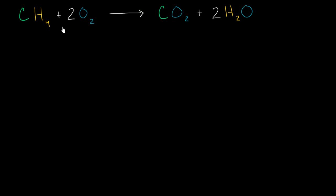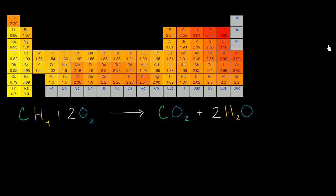Now let's work through this together. Let's first think about the methane. I have a bunch of electronegativities here based on the Pauling scale listed out here. Methane is a carbon bonded to four hydrogens. In our oxidation state world, even though this in reality is a covalent bond, we pretend like they're hypothetically ionic bonds. If we look at between carbon and hydrogen, carbon is more electronegative than hydrogen.